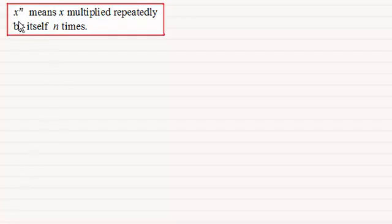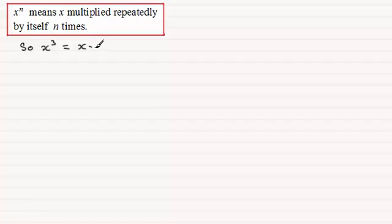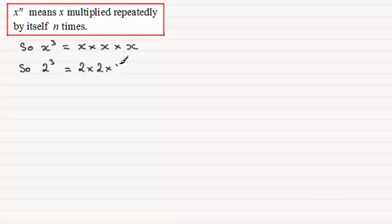As a reminder, x to the power n means x multiplied repeatedly by itself n times. So for instance x to the power 3, or x cubed, means x multiplied by x multiplied by x. If we had 2 cubed, that's 2 times 2 times 2. 2 cubed would be 2 times 2 which is 4, times 2 which would be 8. So that's briefly what we mean by x to the power n.